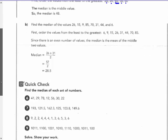Find the median of the values 26, 15, 9, 85, 70, 31, 44, and 6. So, again, order them from least to greatest.